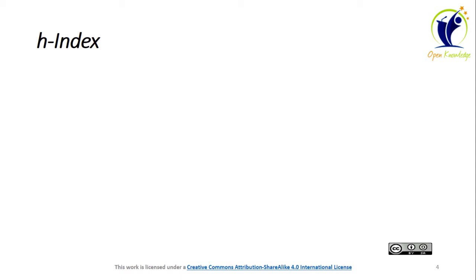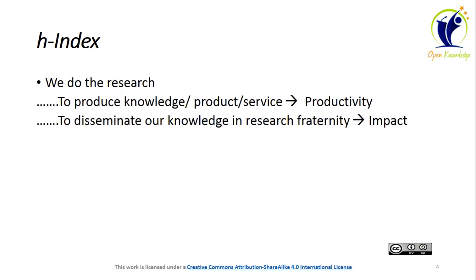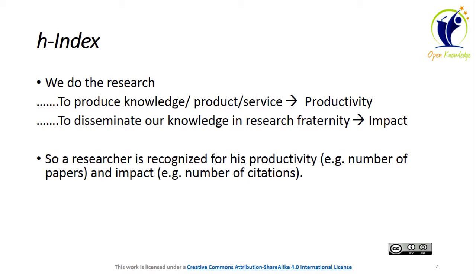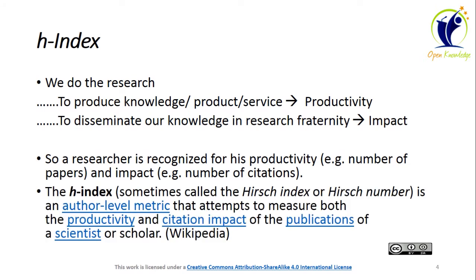H-Index. We do research firstly to produce knowledge, products, and services — that is productivity. Secondly, to disseminate our knowledge in the research fraternity — that is impact. A researcher is recognized for his productivity, that is the number of papers, and impact, that is the number of citations. The H-Index, sometimes called the H-number, is an author-level metric that attempts to measure both the productivity and citation impact of the publications of a scientist or scholar.